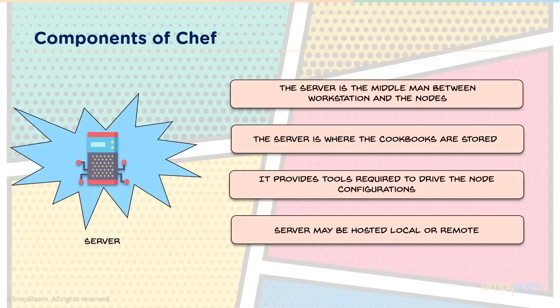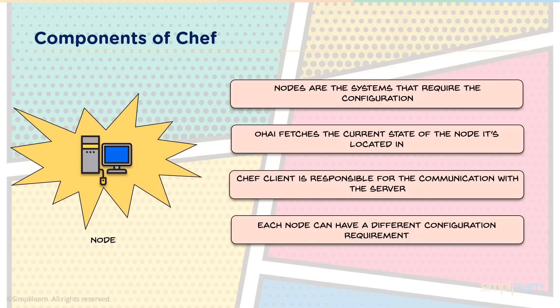The server can be hosted locally on your workstation or remotely, even on a cloud platform. The final component is the node — the systems that require configuration. In a Chef architecture you can have any number of nodes. Ohai is a service installed on the node that collects information about the current state of the node and sends it to the server for comparison against configuration files. Chef Client is another service on the node responsible for all communications with the server, handling recipe requests.